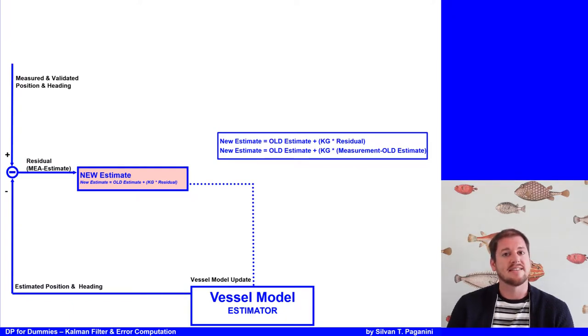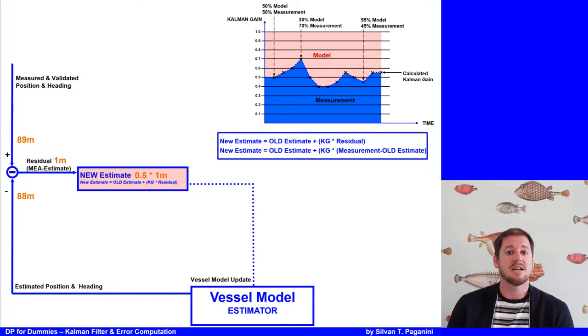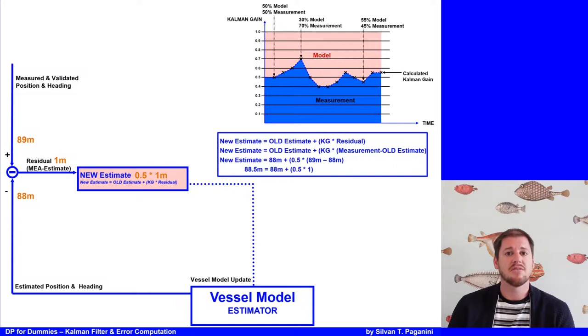Let's make a simple example. Let's say the vessel model estimates a vessel position of 88 meters north of the equator, and a position reference system measures 89 meters north. The Kalman gain will now determine how much of the residual, in our example 1 meter, is being used in the new estimate. If the Kalman gain is 0.5, the new estimate lays 0.5 meters away from the old estimate. If the Kalman gain is 0.7, the new estimate is 70 centimeters away from the old estimate, because the Kalman filter believes 70% of the measurement and 30% the estimate from the model. Let's put the numbers in the formula for the new estimate: that is 88 meters north from the old estimate plus the Kalman gain of 0.5 multiplied with the residual which is 89 minus 88, equals 88.5 meters north. In the next calculating circle, this will be the new estimate.